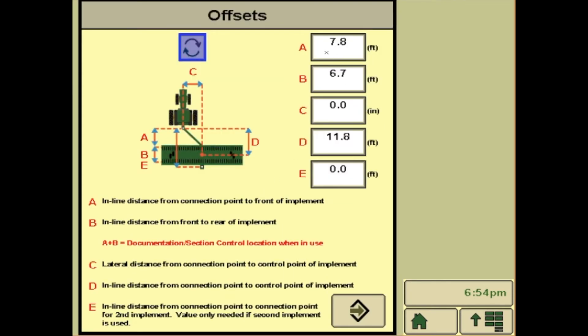In this case, we will be using A and D. A is from the pivot point of your 1770, 1775, 1790, or 1795 planter to the drop of seed.